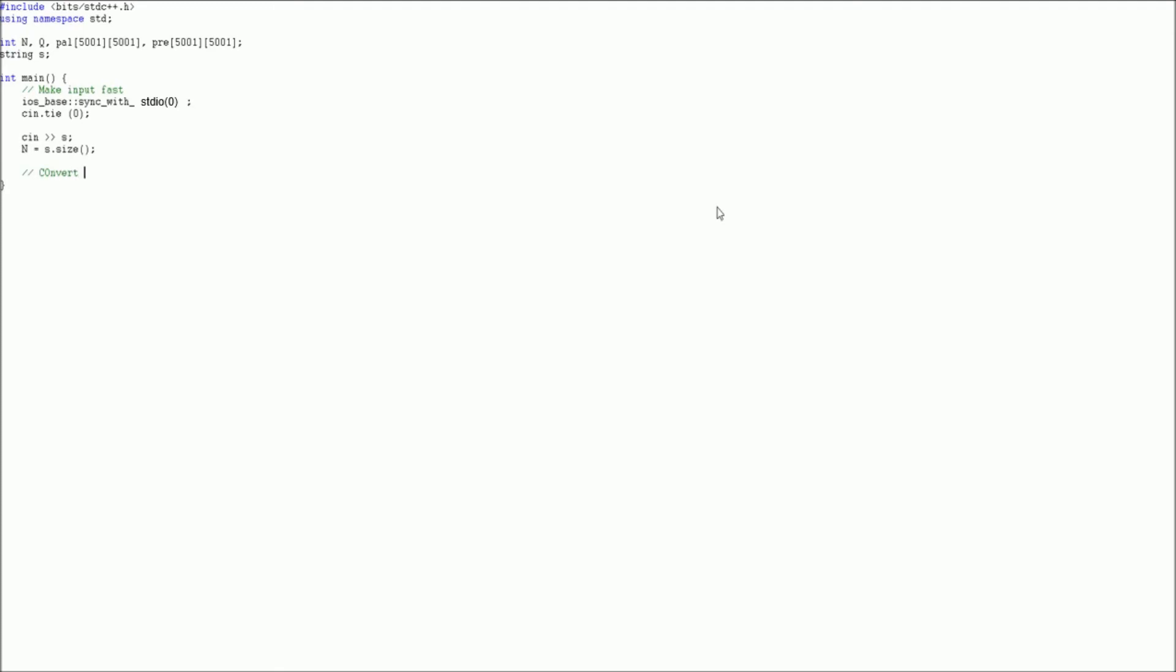We need to convert our string to one-based indexing because our other arrays, such as pal and pre, are all in one-based indexing, and it's easiest to keep everything consistent. We can do this by adding an empty character to the beginning of the string s. We now need to create our palindromes. Our two base cases are palindromes of length 1, and palindromes of length 2. All strings of length 1 are palindrome, so we simply loop through all strings of length 1 and mark them as palindromes.